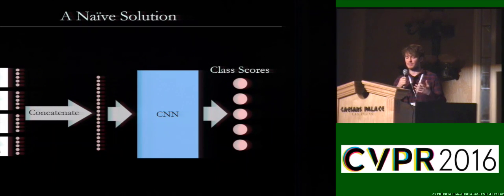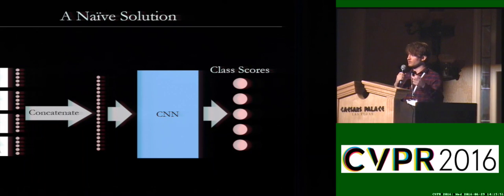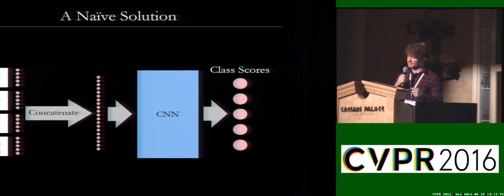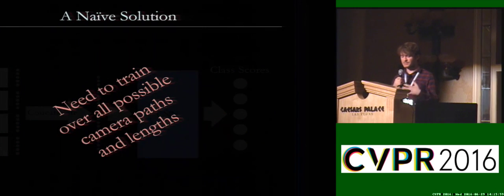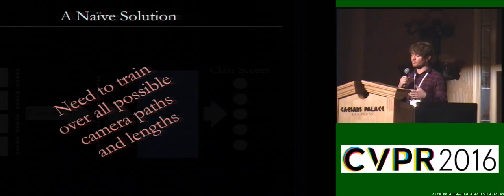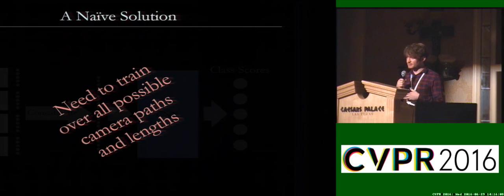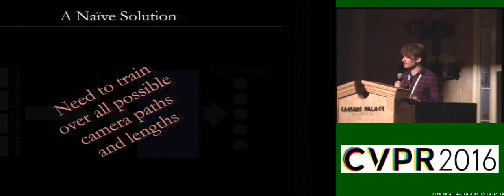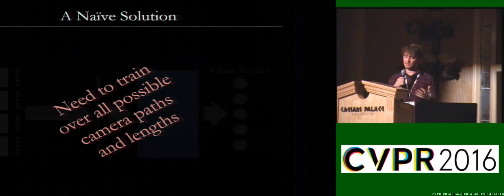One naive solution would be to take all of these images, concatenate them into a single long vector, and train a CNN to classify this vector. The problem is you would need to train on all possible camera paths and lengths, which is highly unscalable and prone to overfitting. Additionally, the number of images can vary, giving different input lengths to the neural network — something which neural networks can't readily handle.